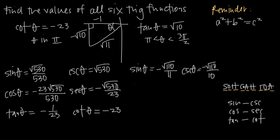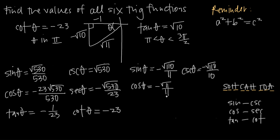Cosine is adjacent over hypotenuse: cosine of theta equals negative 1 over root 11. Multiplying by root 11 over root 11 gives negative root 11 over 11. For secant, the reciprocal is negative 11 over root 11. Since 11 equals root 11 times root 11, a factor cancels and secant of theta equals negative root 11.